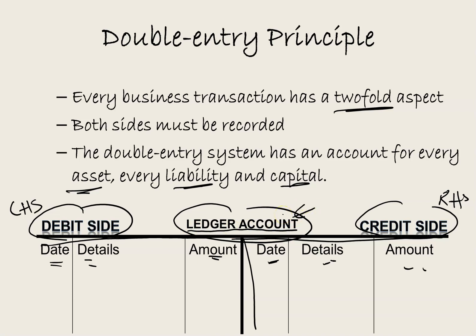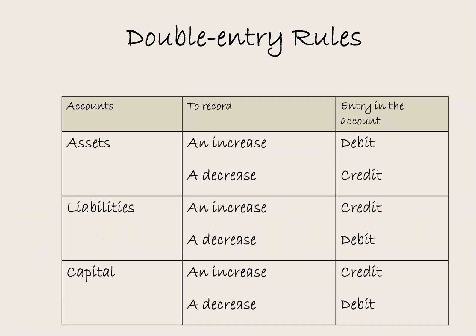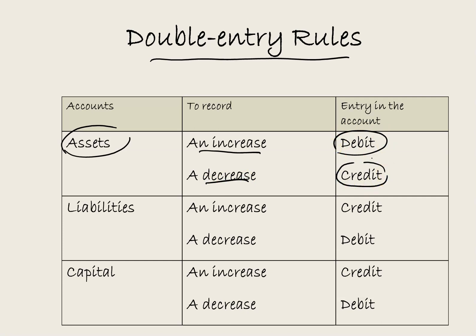Our ledger accounts could be called bank, motor vehicles, capital, or whatever the case may be. When there is a transaction, in one ledger account we will put the entry in on the debit side, and in another ledger account we will put it in on the credit side. The trick is deciding which account to debit and which account to credit, so we have some double entry rules. To increase an asset account, write the transaction in on the debit side. To decrease the asset account, write the transaction in on the credit side.